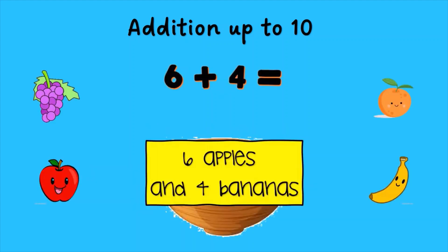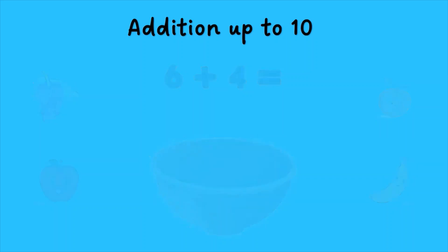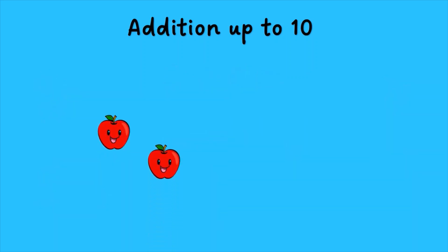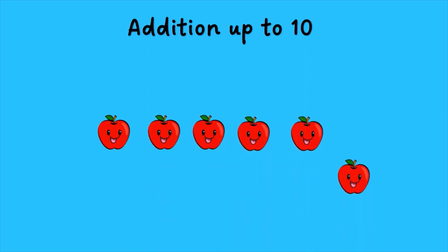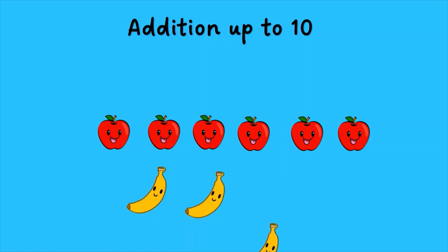Six apples and four bananas. One, two, three, four, five, six, seven, eight, nine, ten. The sum is ten.